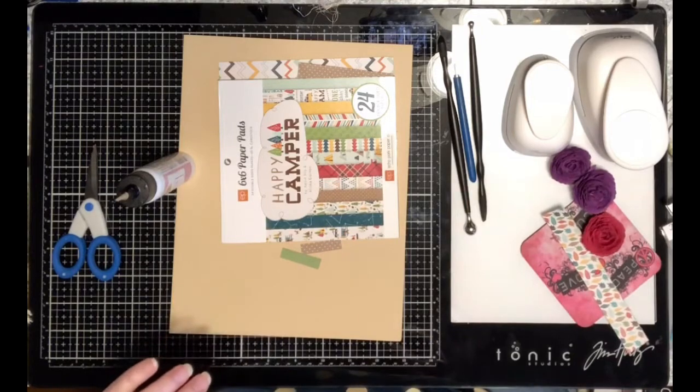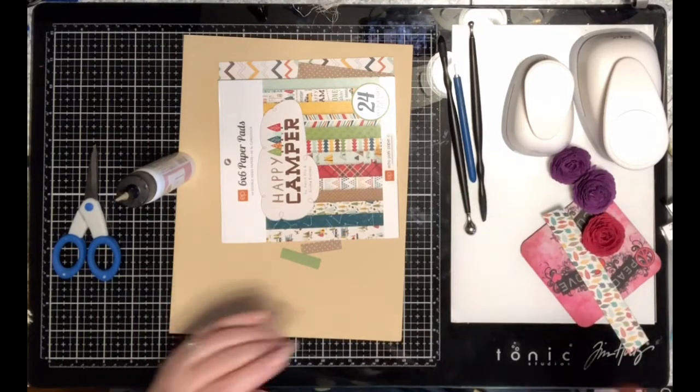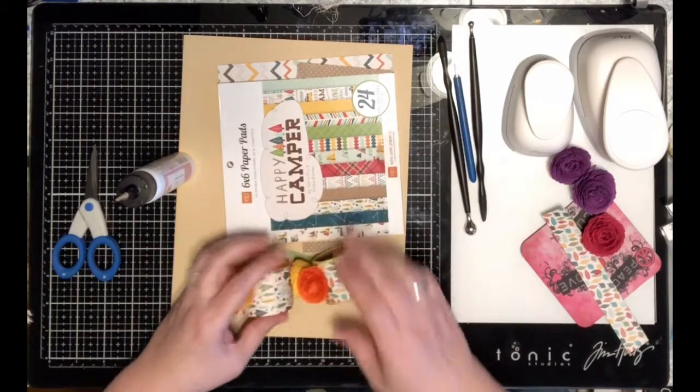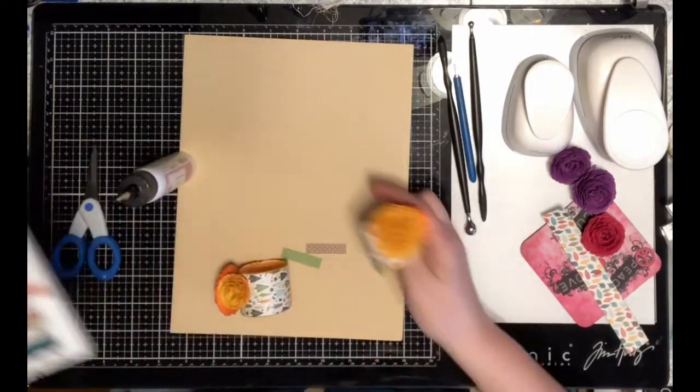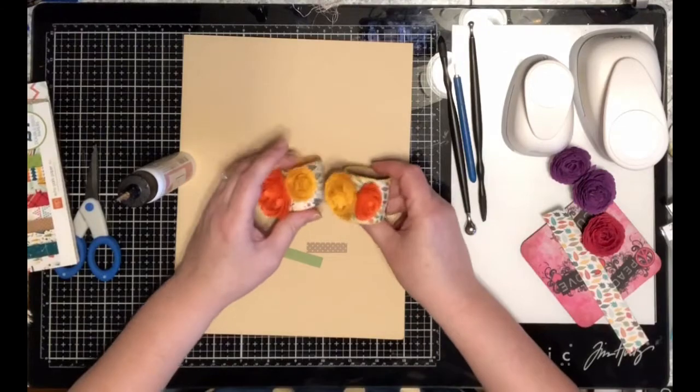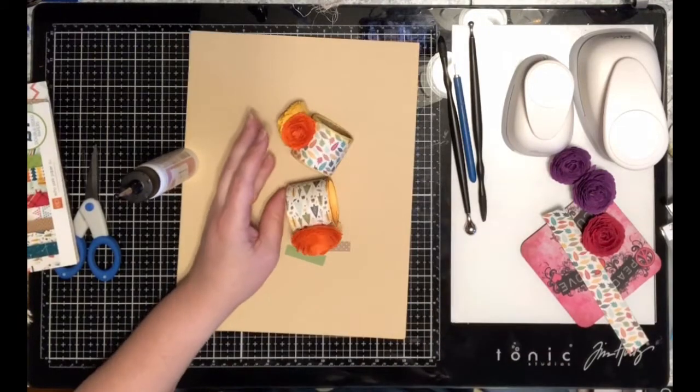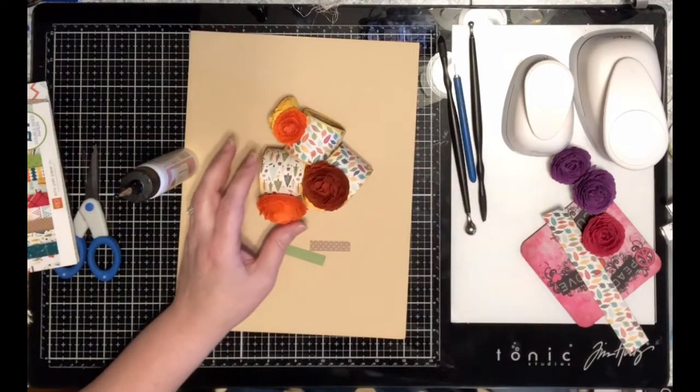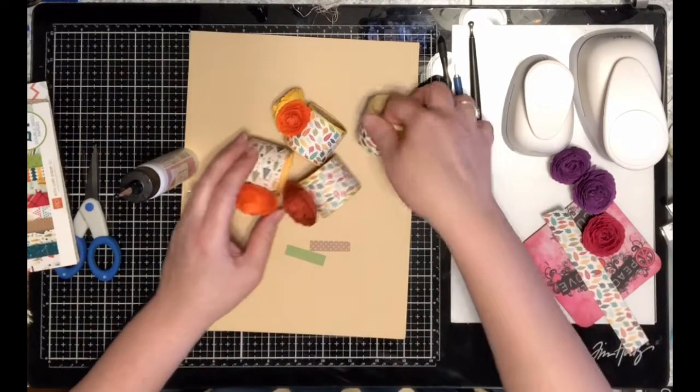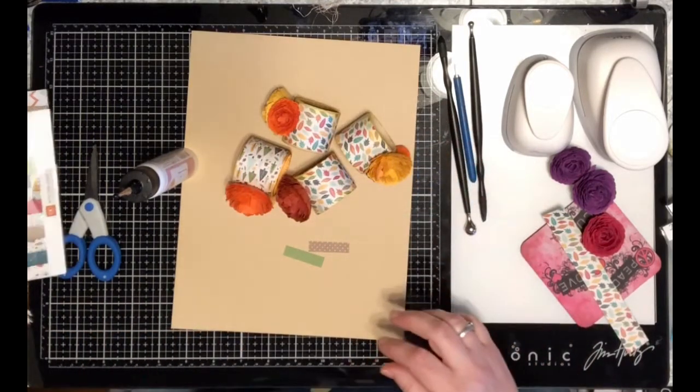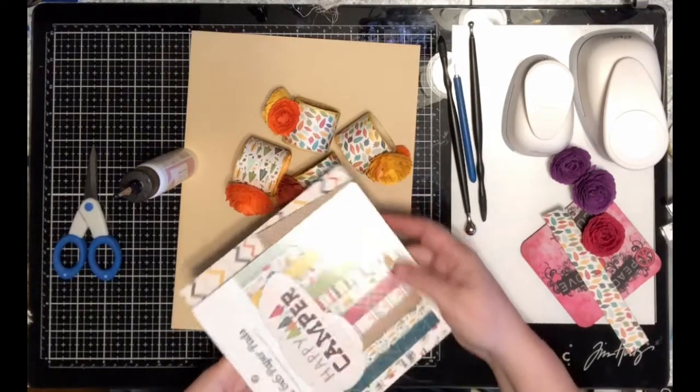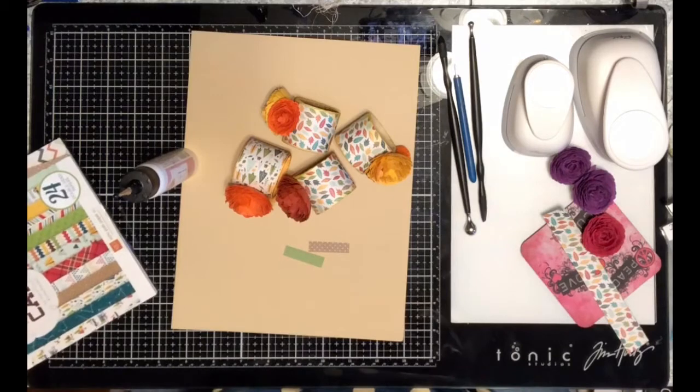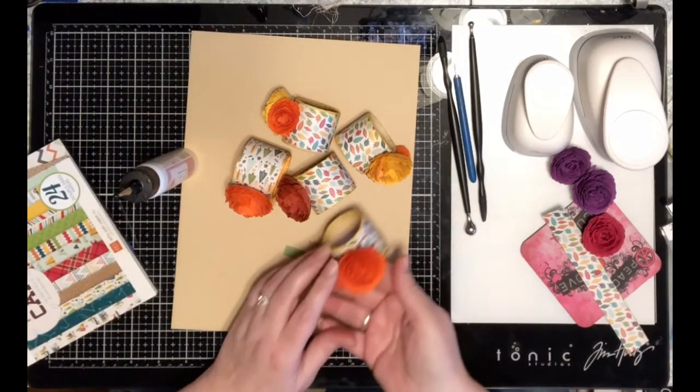With these mums, what can you do when you make a bunch of mums? Well, you can make some really cute fall napkin rings. On these, I've just used some solid paper cardstock and I've used this cute little Happy Camper paper to go around these rolls.